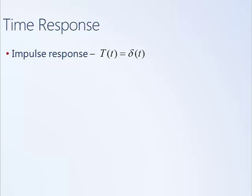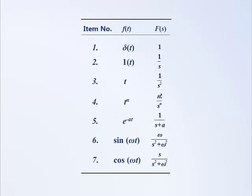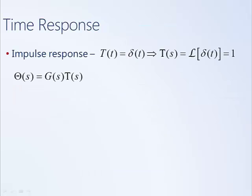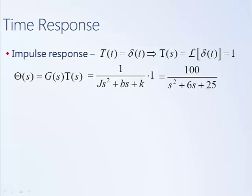First, let's consider an impulse input — the impulse response of the drive line. This could represent a very rapid spike in torque: a large torque for a short duration. The output theta(s) is the transfer function times the input signal. G(s) is defined as 1 over (Js² + bs + k). The Laplace transform of a unit impulse is just 1. Substituting in with specific numbers for J, b, and k gives us the expression for theta(s).